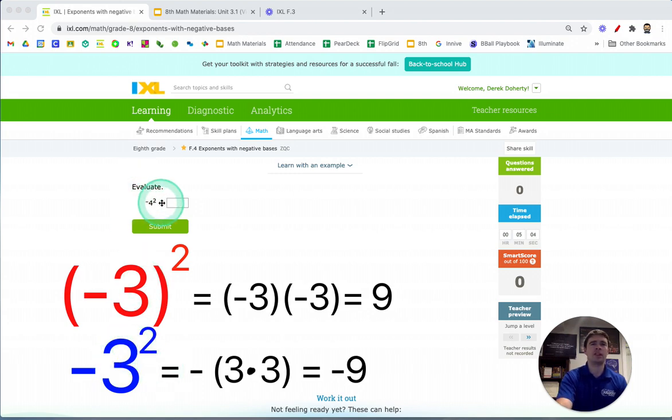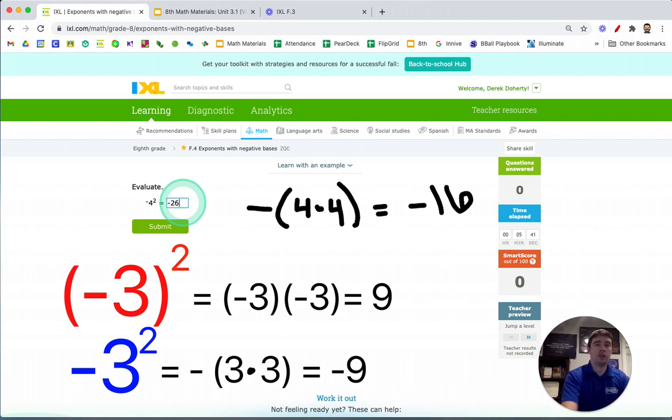And so for our first example here, they're giving us the opposite of 4 squared. That negative 4 is not in parentheses, so this says the opposite of whatever 4 squared is. So we'll go ahead and draw some notes out here. And this is really saying the opposite of 4 times 4, or the opposite of 4 squared. And if 4 times 4 gives us 16, the opposite of 4 squared is going to give us negative 16. So here, we did 4 squared first, and then we applied the negative sign, because it said to do the opposite of 4 squared.